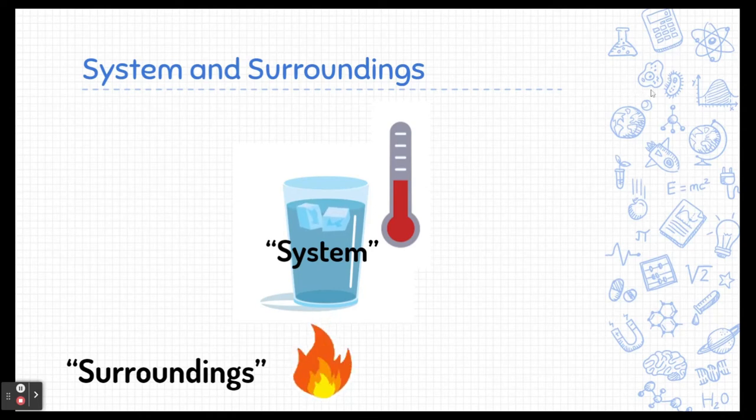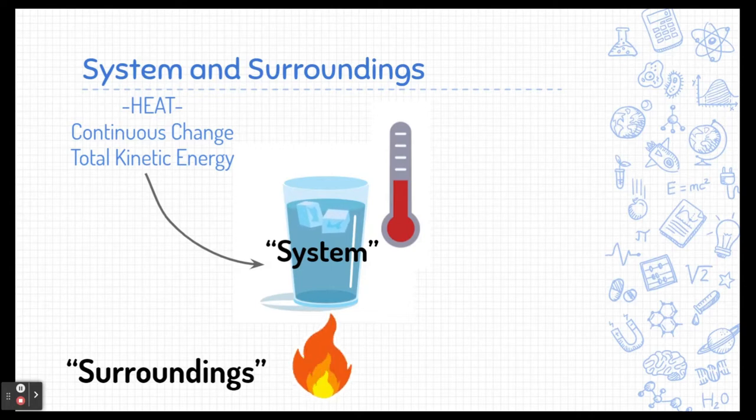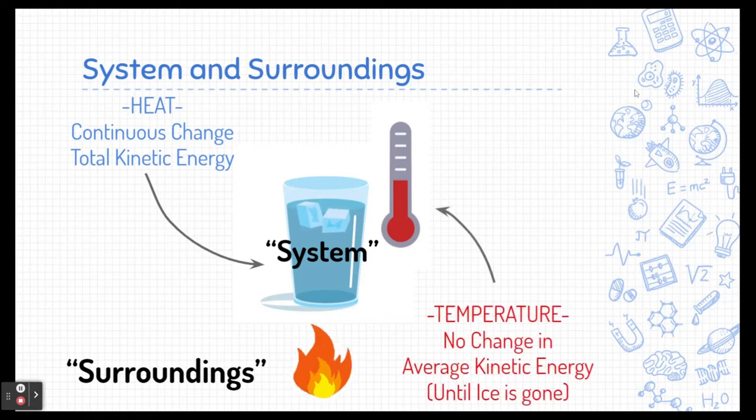Now our system here is ice water. This ice water is continually changing its total kinetic energy. Notice that the surroundings is continually adding heat to our system. Now if we were to put a thermometer in that system, we would see that the temperature is not changing. It would reach a point and it would be stagnant. Even though we are continually adding heat, the average kinetic energy wouldn't change. The temperature wouldn't change at least until the ice is gone.